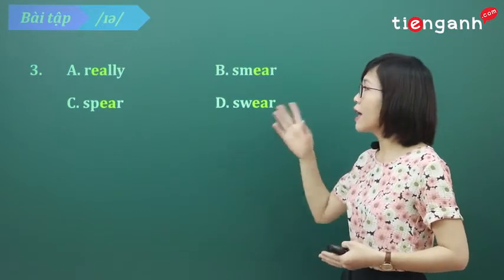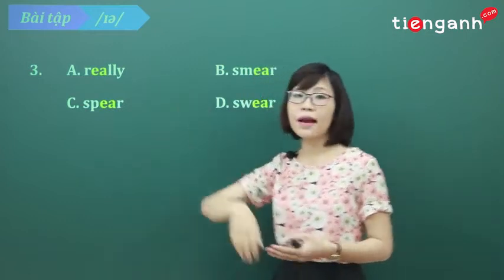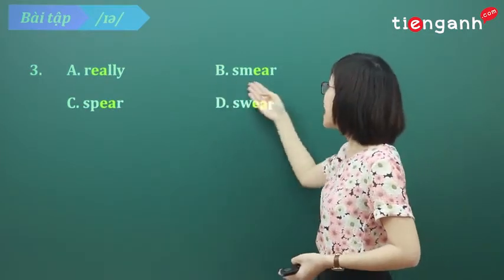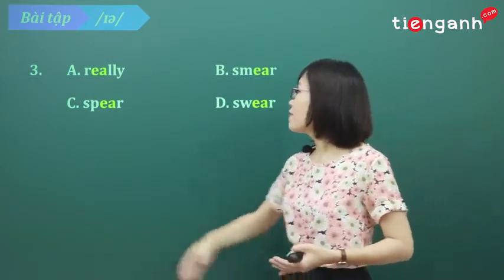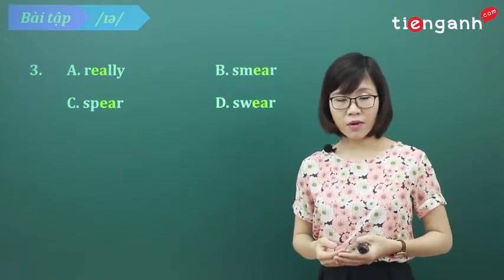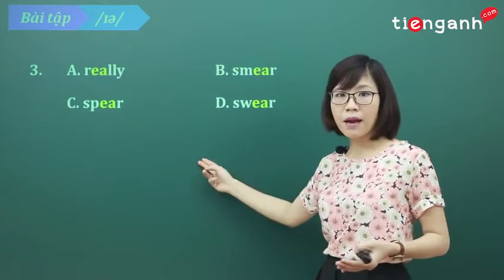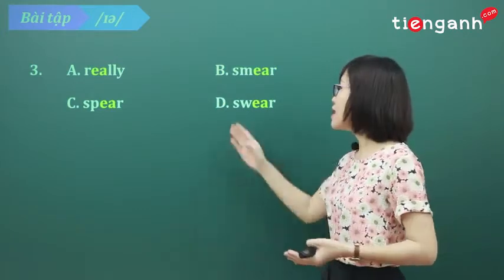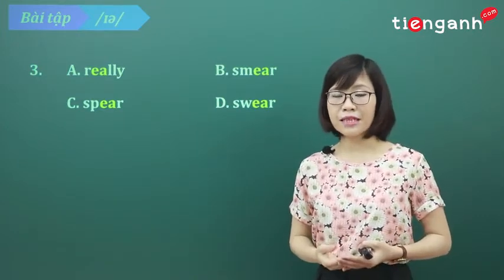Chúng ta thấy dù mặc dù đều giống nhau ở chữ E và A, nhưng mà từ A phát âm là 'really' — 'ear'. Từ B phát âm là 'smear' — cũng là 'ear'. Và từ C của chúng ta phát âm là 'spear' — cũng 'ear'. Chỉ riêng D — từ 'swear' — phát âm là 'air'. Vậy thì D — 'swear' — chính là từ phát âm khác.